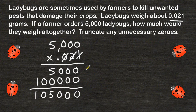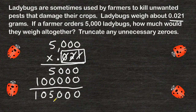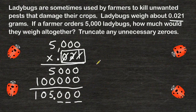Now we have to make sure to place our decimal in the correct location. After this decimal there is a total of three place values, so the same thing must be true in our answer. Therefore, we are going to place the decimal so we also have three place values after it. And if all of your numbers are zeros after the decimal, you really don't need them. So we would say that all of these ladybugs would weigh about 105 grams.